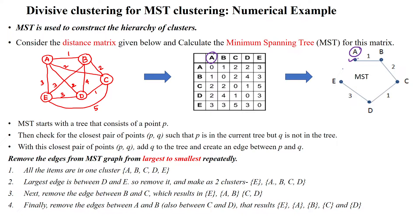Now this is added into the minimum spanning tree. We check the closest pair of points P and Q. A is assigned as P. We check which data point is closest to A — the minimum distance is edge 1 reaching to B. So we select B as the closest data point to A.